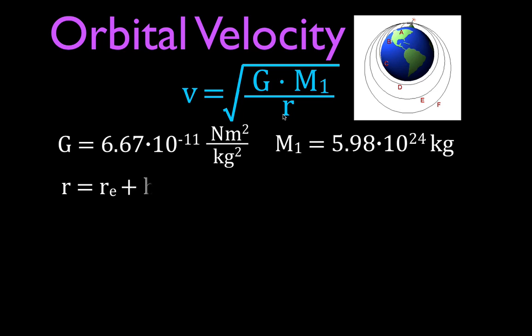Now, R is kind of the interesting thing here. R is not just the height above the Earth. It's not one meter. R, when we use this equation, when we talk about orbital velocities, it's the radius of the Earth plus the height. It's the distance away that the object is from the center of mass of the center of the Earth.